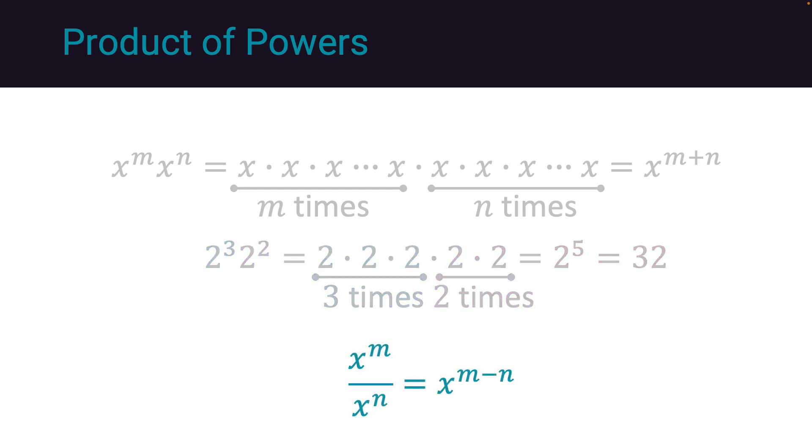Similarly, if we have a ratio of powers, we subtract the exponents. x to the power m divided by x to the power n is x to the m minus n.